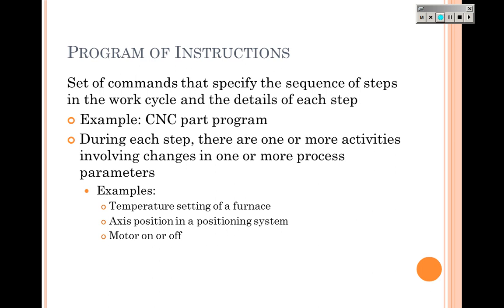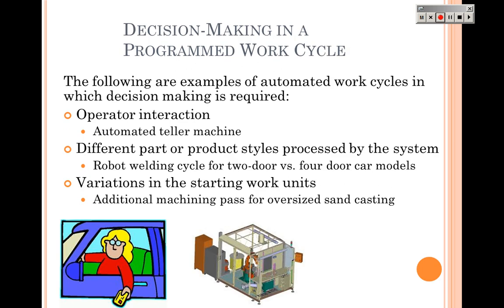A program of instructions consists of commands that tell what's going to happen step by step. Think about CNC code to machine a part — that is a specific step-by-step set of instructions. In each step, things change and they change the process parameters, such as temperature settings for a furnace, position on one or multiple axes, or motor and lamp on/off controls.